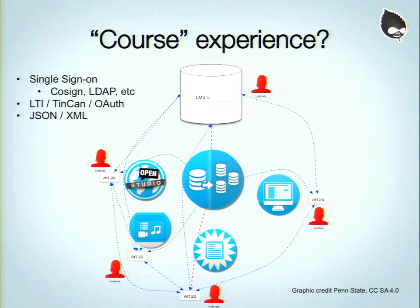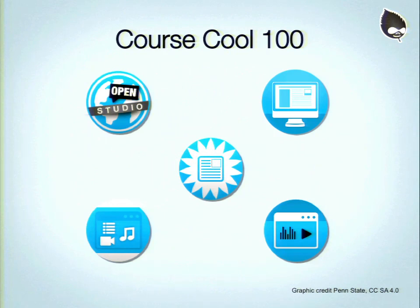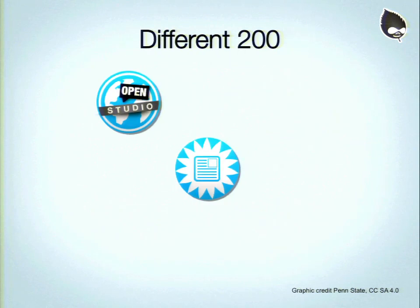What's a course experience like? We're taking a student and saying they need to interact with all these systems, but we have to make it so they never know they're interacting with all these systems — otherwise UX suffers drastically. We have single sign-on systems like Cosign, LDAP, Web Access, LTI, Tin Can, OAuth. JSON and XML can be used for the actual systems to talk to each other behind the scenes, which is also very important in stitching the experience together.